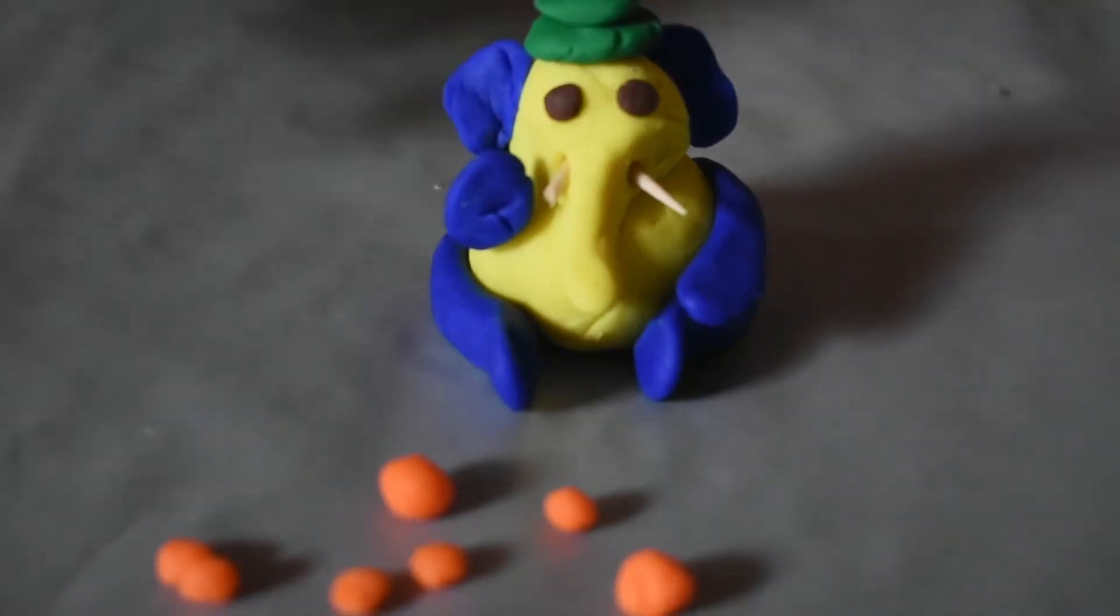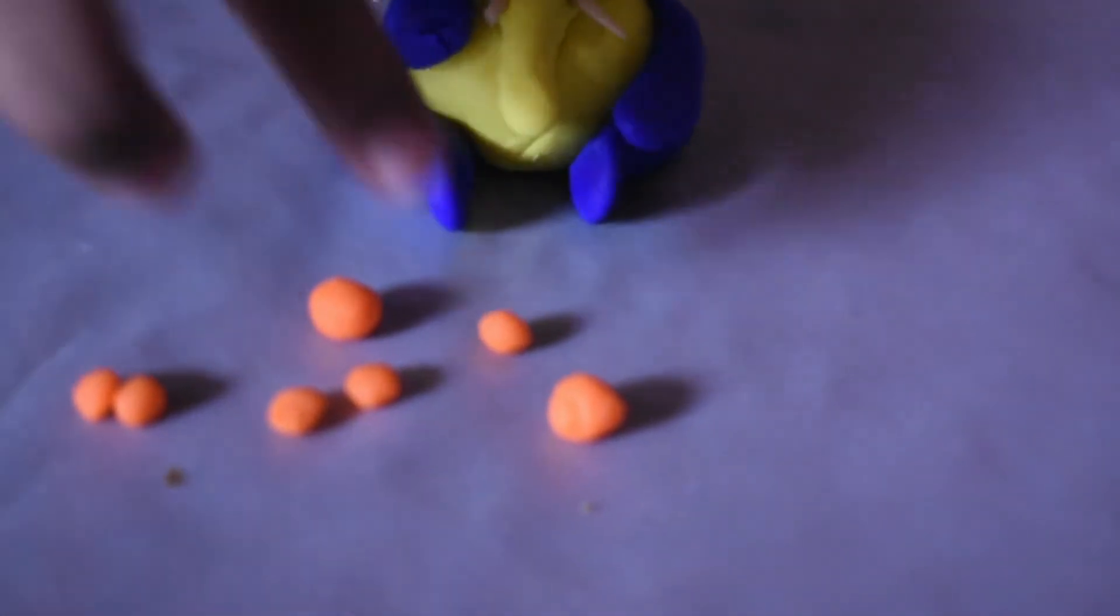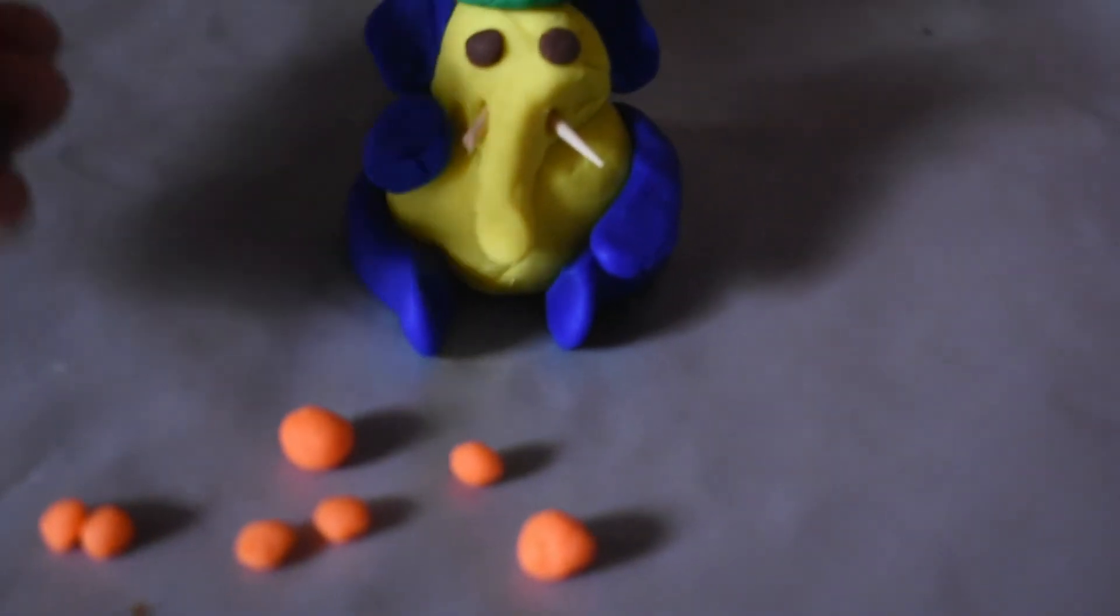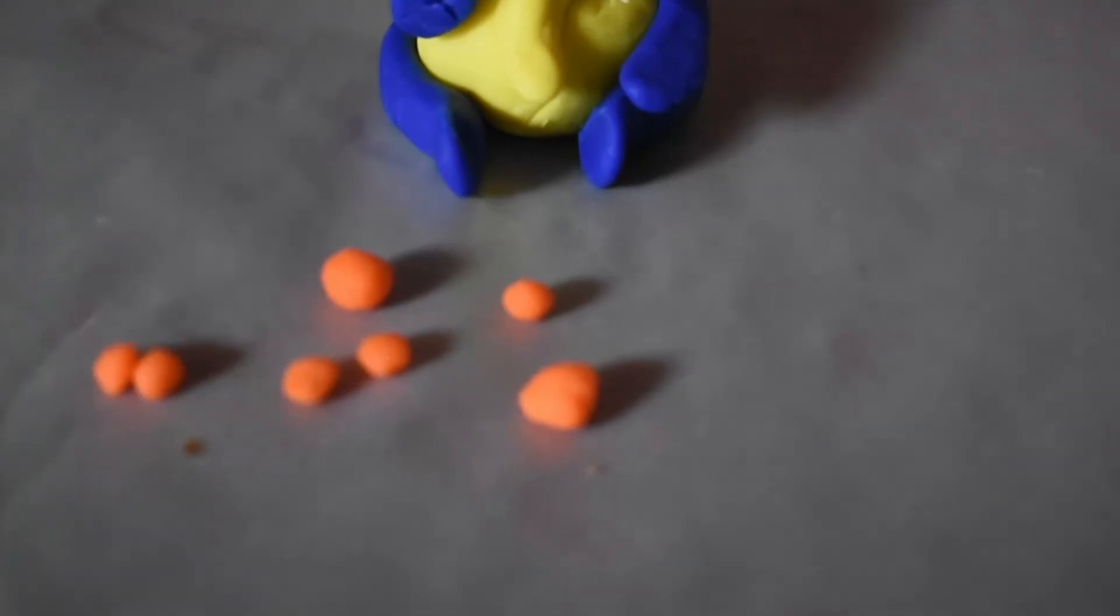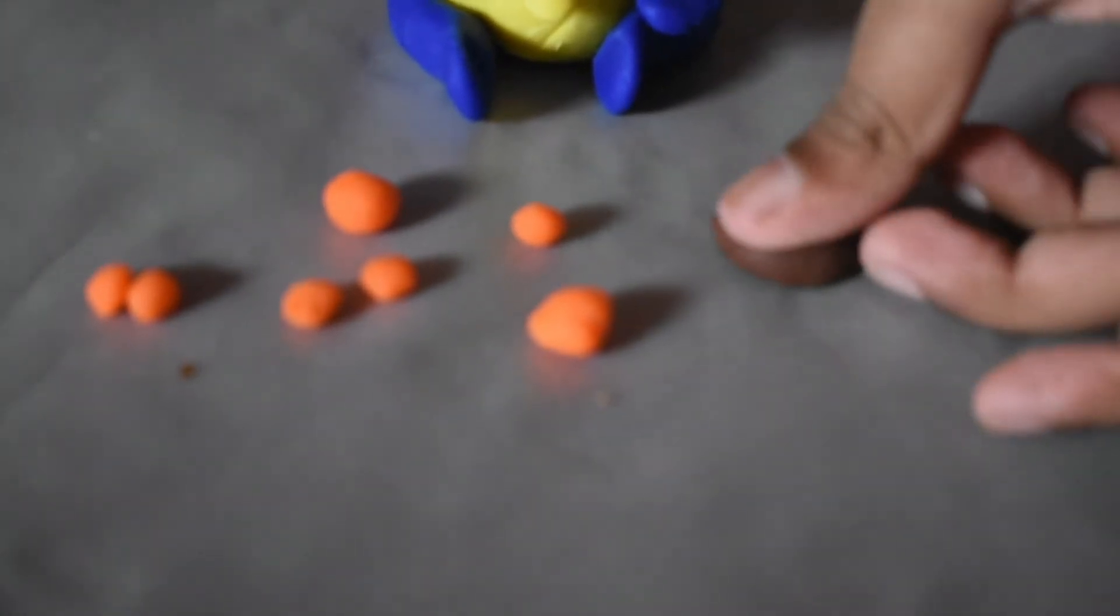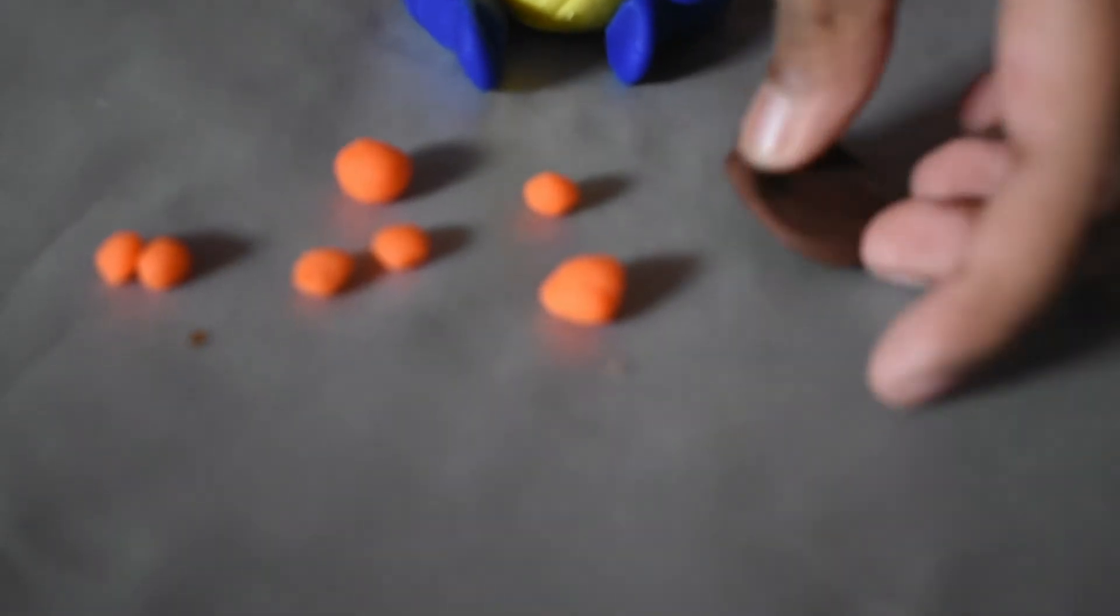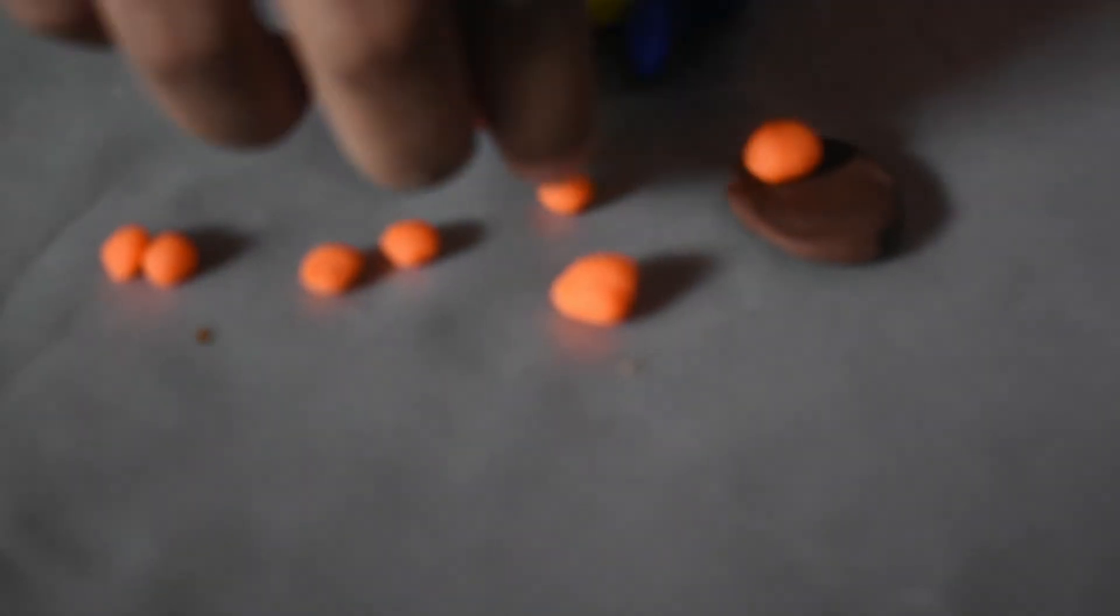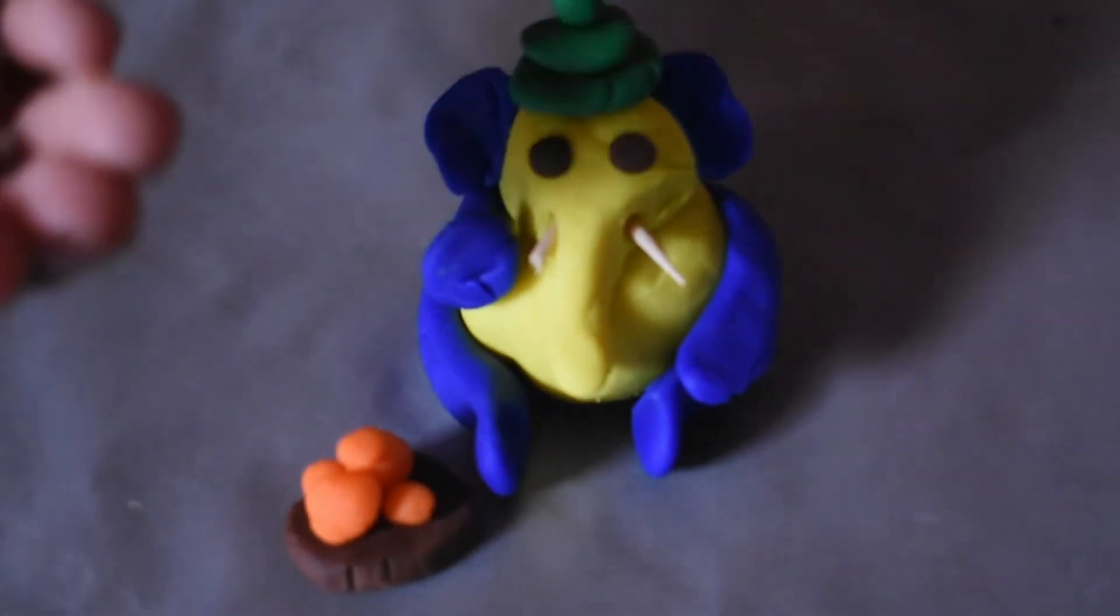I have made some laddos with orange clay. Now I am going to make a plate for the laddos. Make a ball and press it with your thumb. Now let's place the laddos. Now I am going to place one laddu on Ganesha's hand.